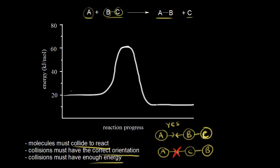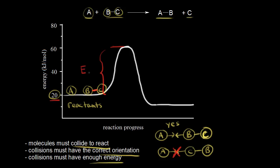Let's go ahead and draw this in. We're starting with a certain energy for our reactants — we have atom A and molecule BC at this point, and let's say our total energy is 20 kilojoules per mole. When the atom and the molecule collide, they need enough energy to break the bond between B and C. We can find that energy on our diagram: starting with 20 kilojoules per mole, we need to get up to 60. This is how much energy we need for the reaction to occur, and we call this the activation energy, symbolized by E sub A.